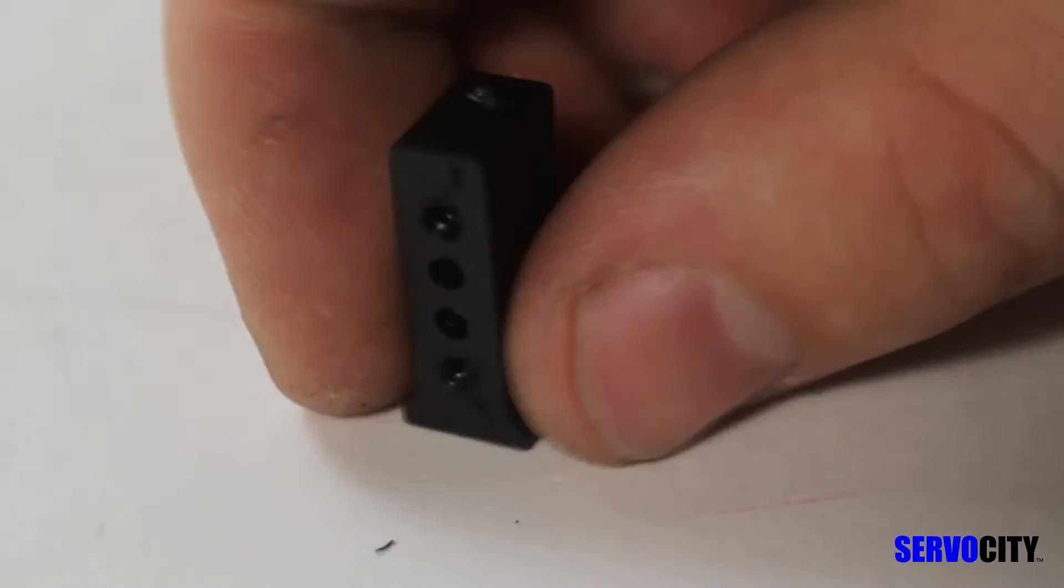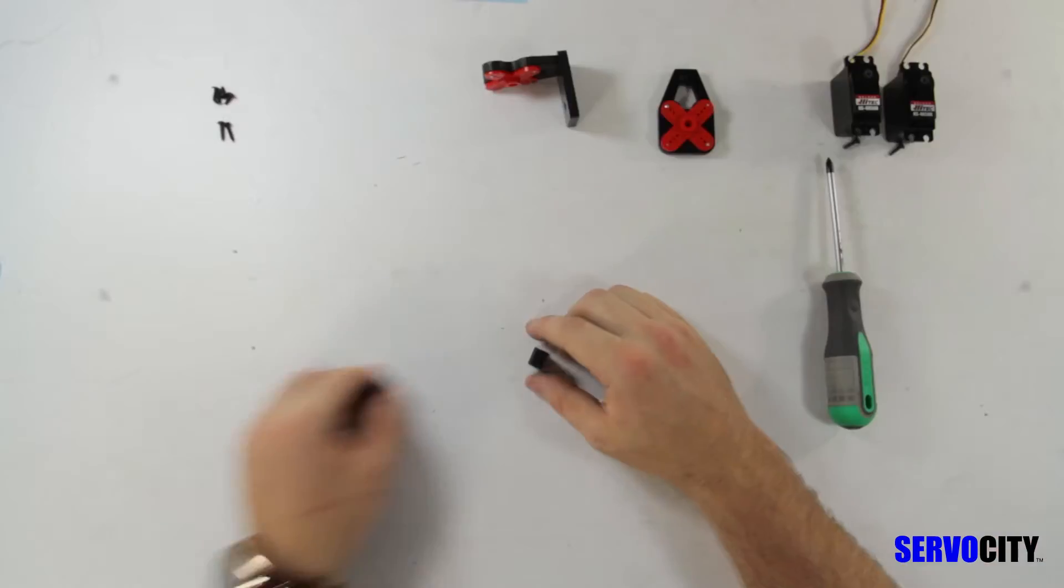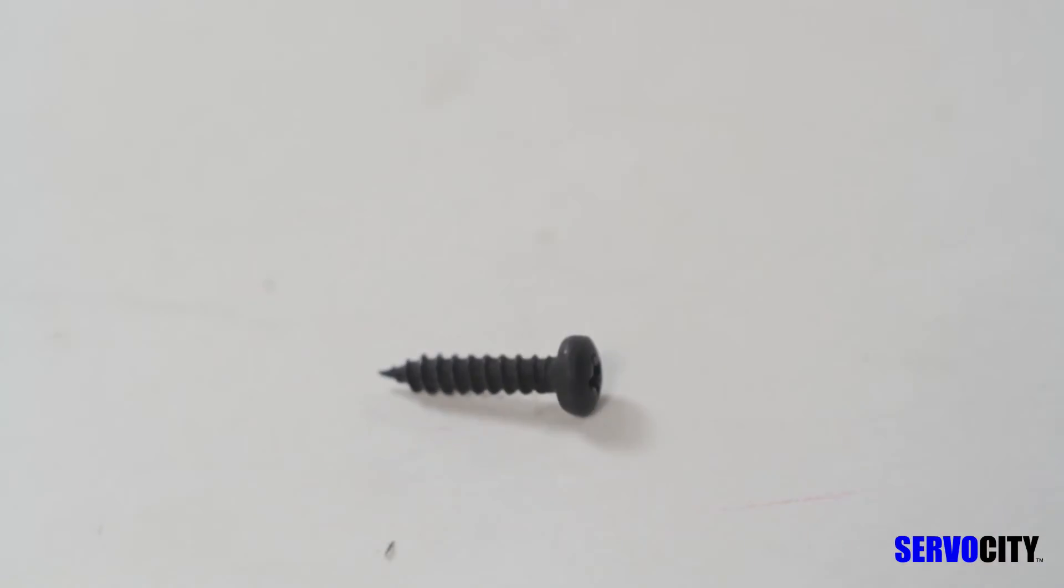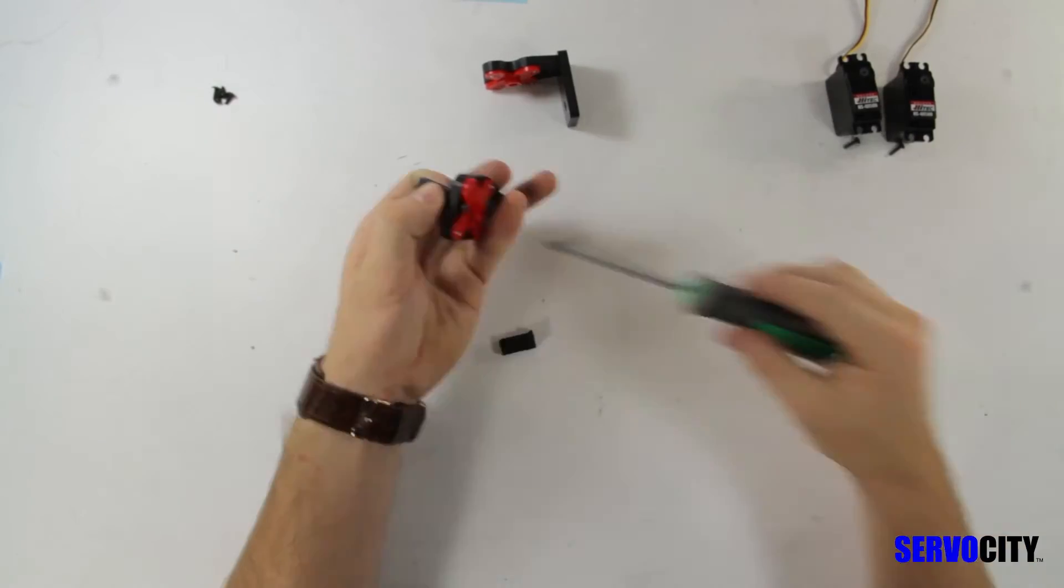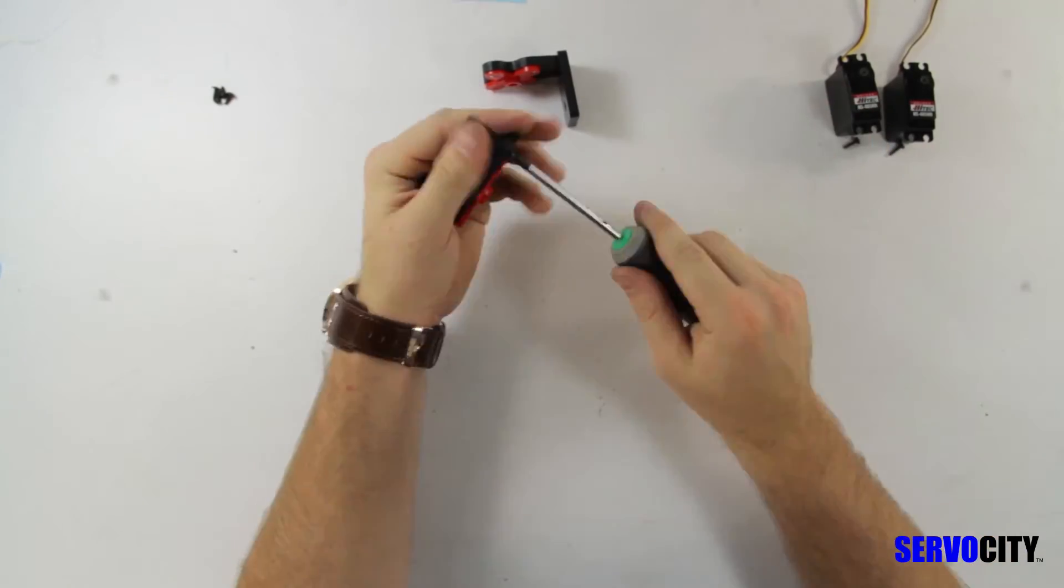Next you need the black servo mounts and two 1 1⁄2 inch black Phillips head plastic screws. You will attach those servo mounts to the other ABS plate that we assembled first.